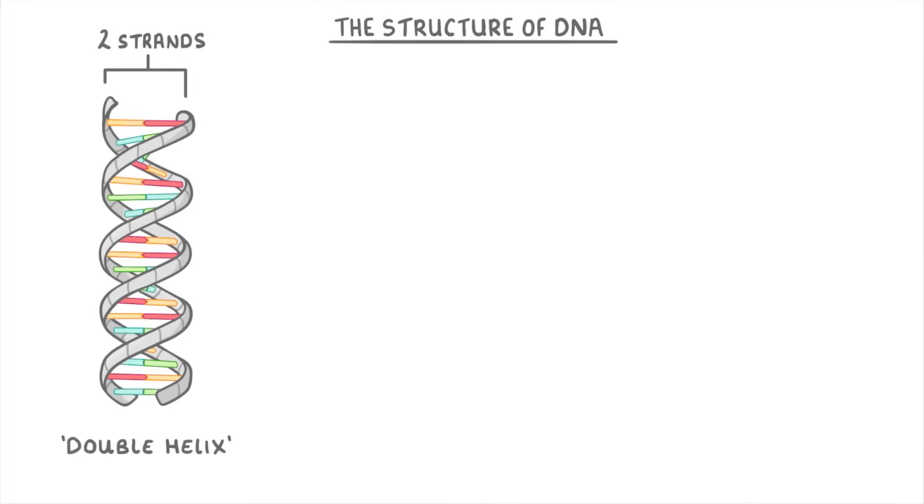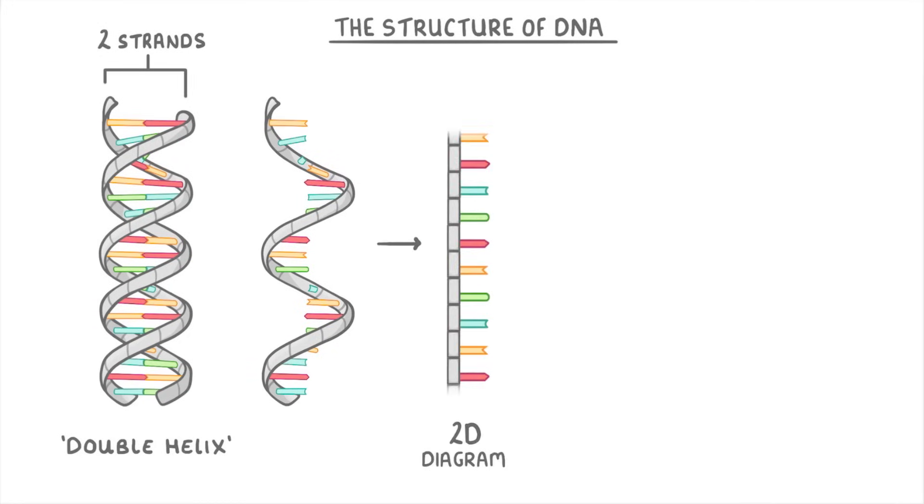To understand the rest of the structure, let's take just one of these strands and then show it as a 2D diagram as though it's been untwisted and laid out flat. So we're now looking at this section here of the original strand.